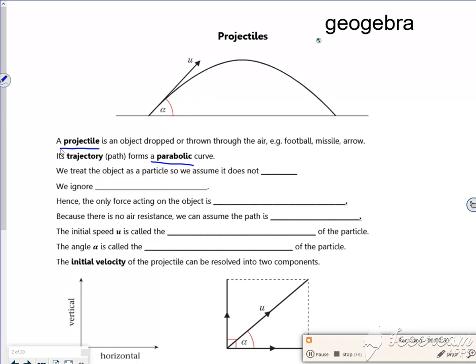So we treat the object as a particle, so we assume it does not spin, because spin causes us lots of issues. And we ignore air resistance.